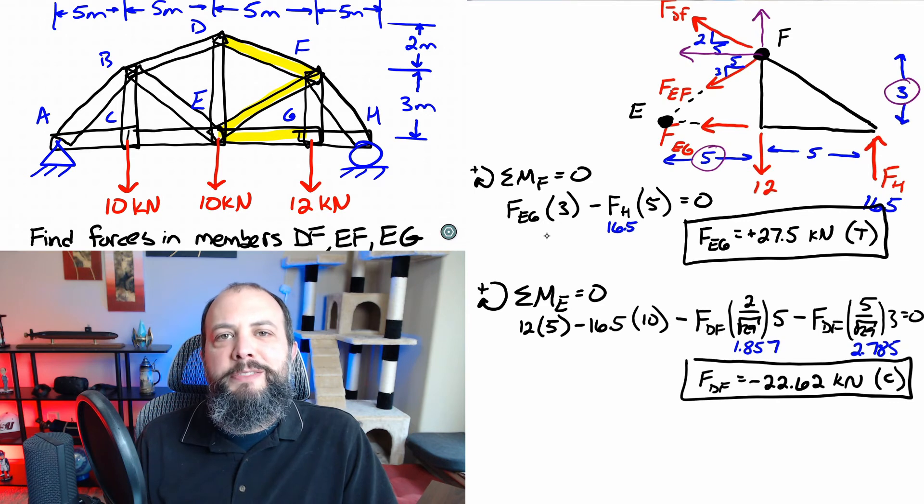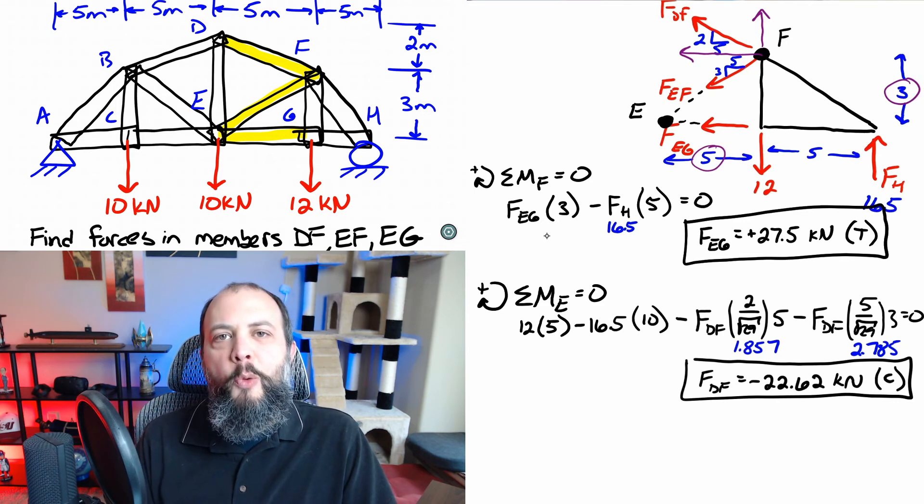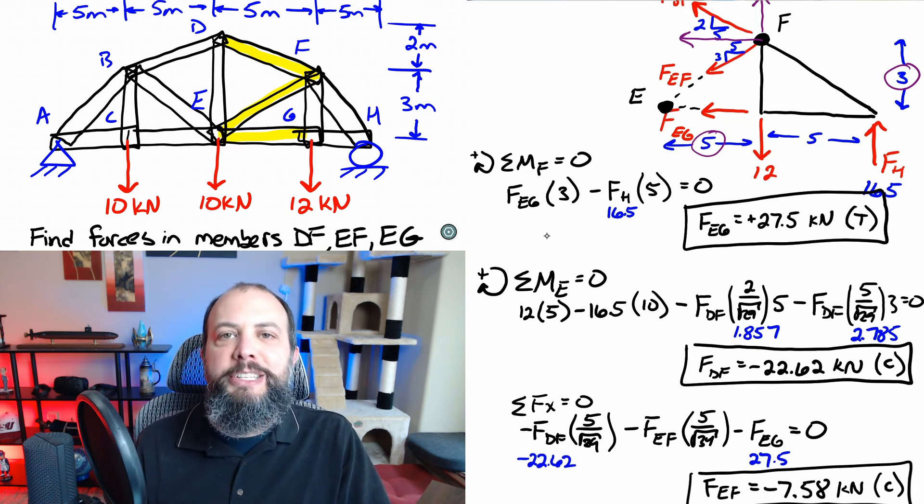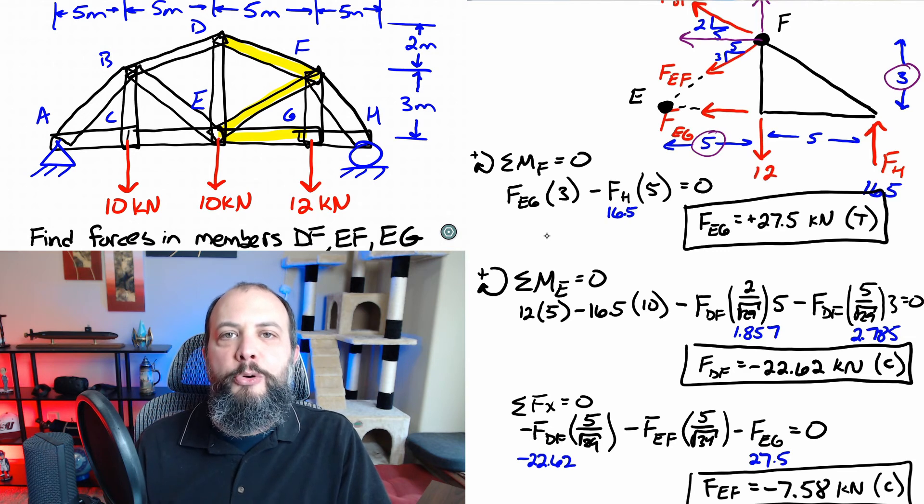At this point it's probably easiest to finish with the sum of forces in the X or Y direction. Since we've already solved for the other two forces FEF is the only unknown in the x direction. So when we plug in the other two values we can get to its final answer to see it's also force in compression.